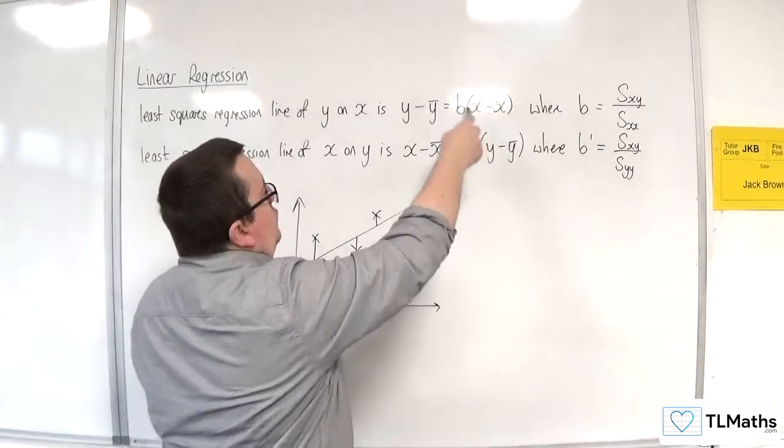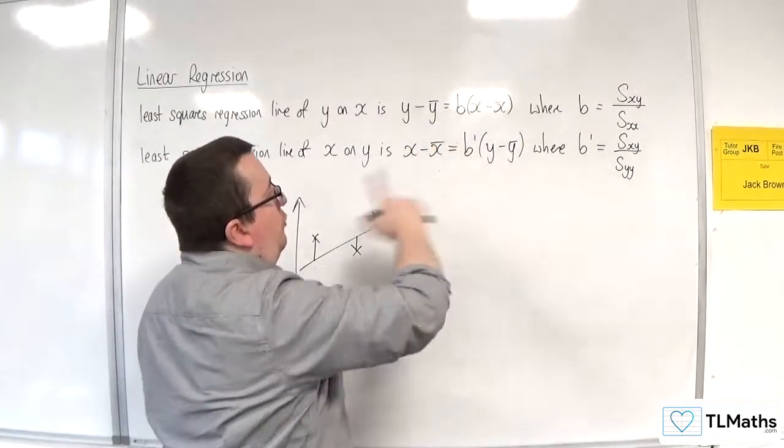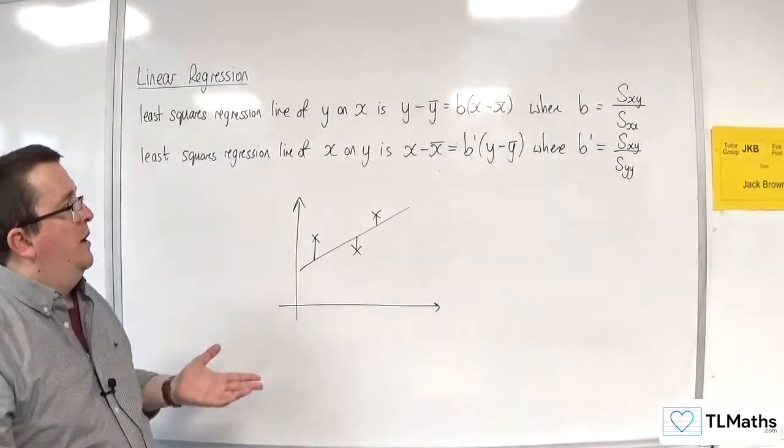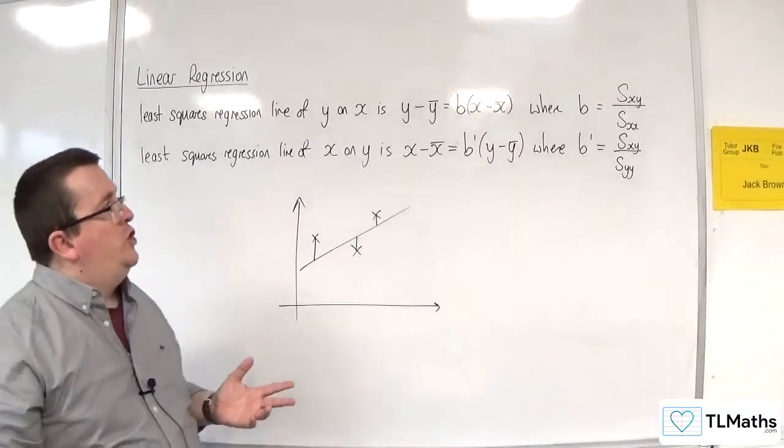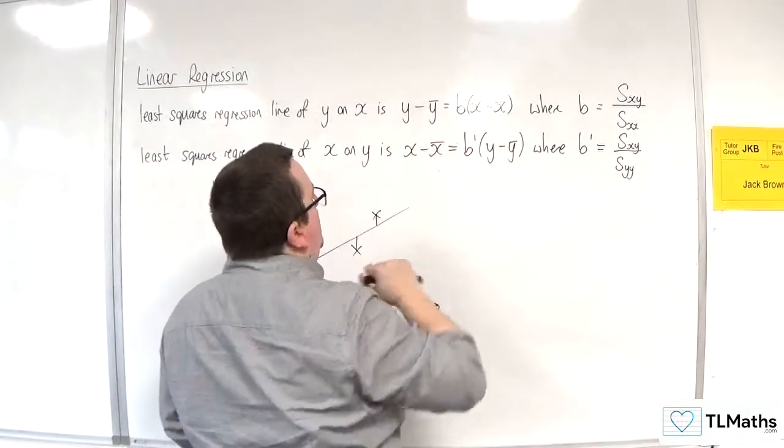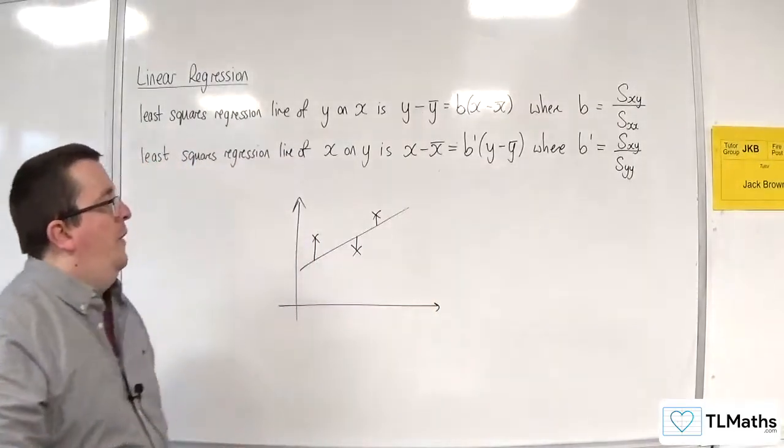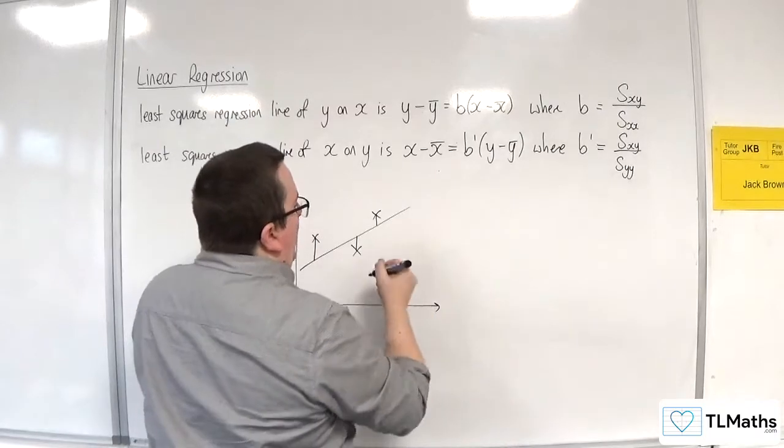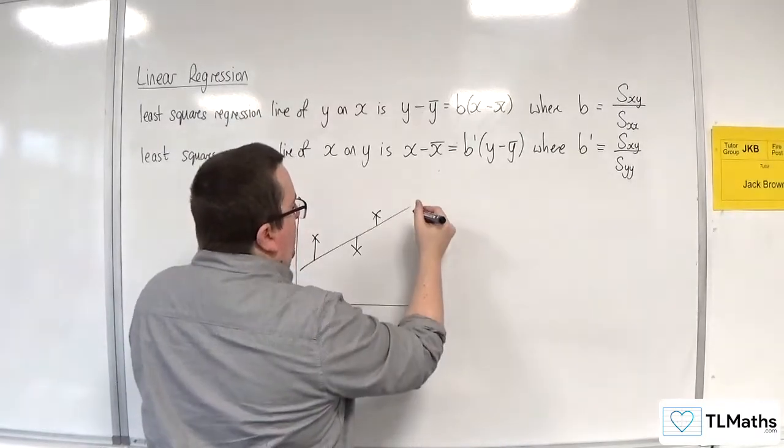These are the regression lines and you can see they're in the form of y minus y1 equals m times x minus x1, as you'd expect from an equation of a line. You can see the point they're going through is x̄, ȳ. So any regression line will always go through x̄, ȳ.